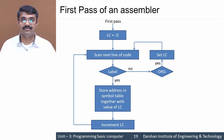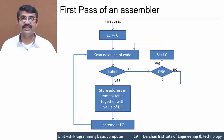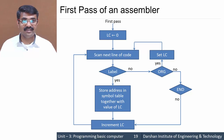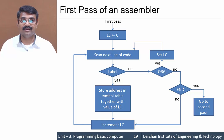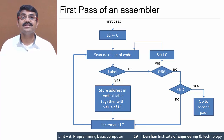If the instruction is not ORG, we check for another pseudo instruction: END. If it is not END, we directly go to incrementing the location counter and continue the cycle of scanning the next line. But if the pseudo instruction is END, we end the first pass of the assembler and move directly to the second pass. The only goal of the first pass is to find symbols in the assembly language program and store their addresses in the symbol table.